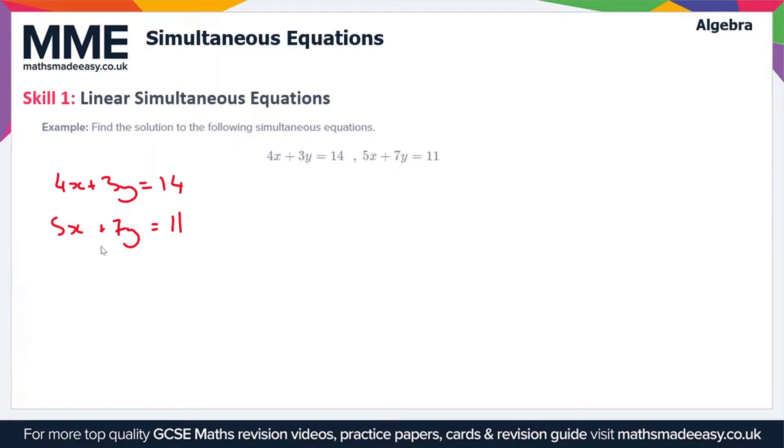Now the method that we're going to use to solve these equations is called elimination. So what we have to do is multiply each of these equations, so scale them up, such that one of the values, so x for instance, is the same in each. So then we can subtract one equation from the other to eliminate the x and we'll just be left with the y terms.